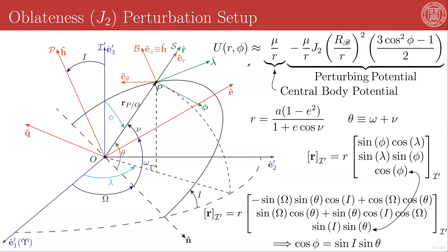Recall that in the azimuthally symmetric case, we have a potential that is a function of the orbital radius magnitude r and the zenith angle or polar angle phi of the orbiting body only. It is independent of the azimuth angle lambda.